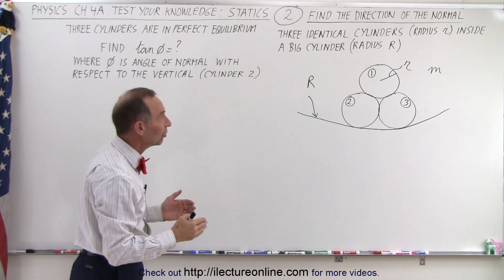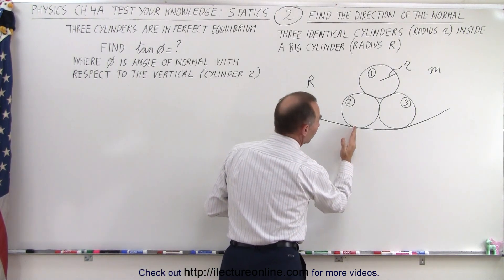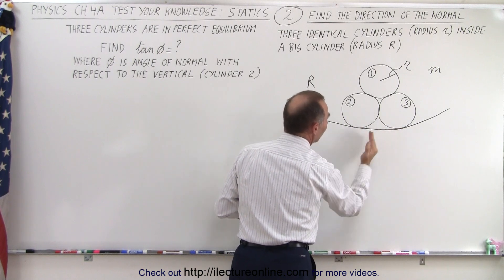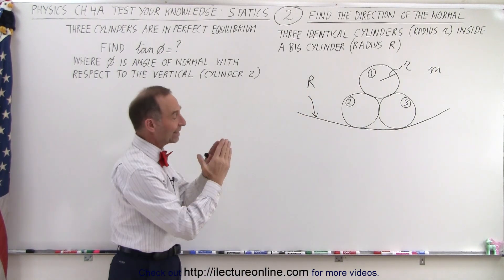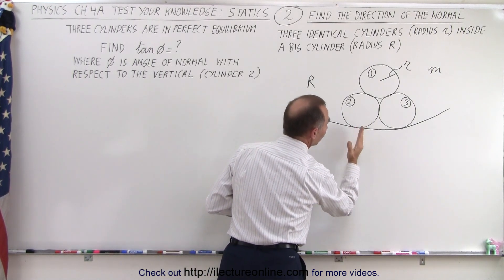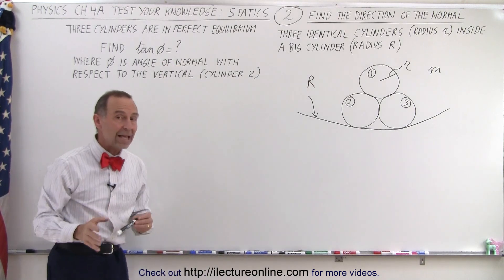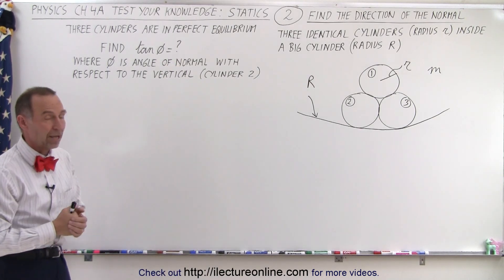Now the question is, what is the angle between the normal of the bottom two cylinders and the vertical line? So we have to find that angle where the bottom one is supported relative to the vertical, and we have to put that in the equation, tangent of that angle equals what?